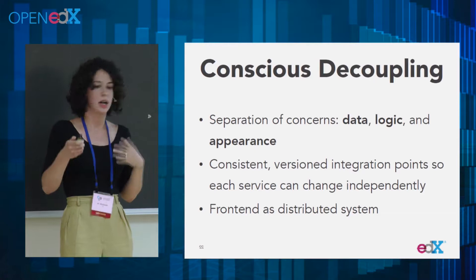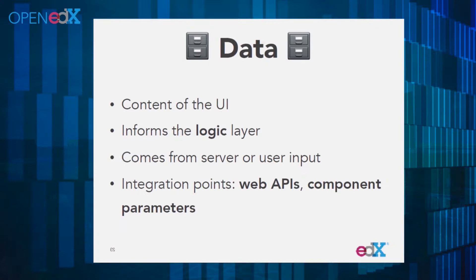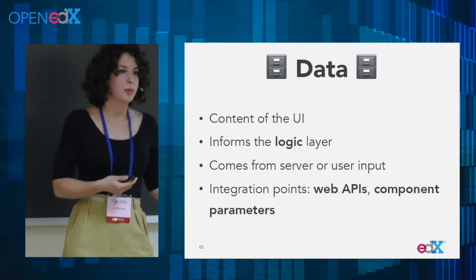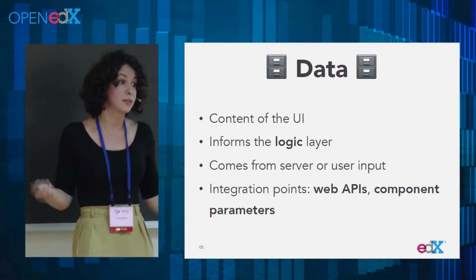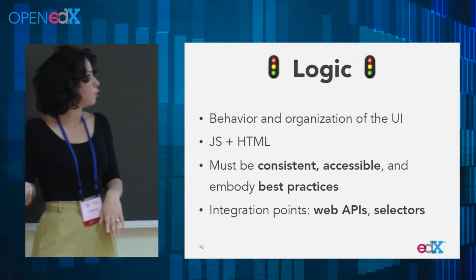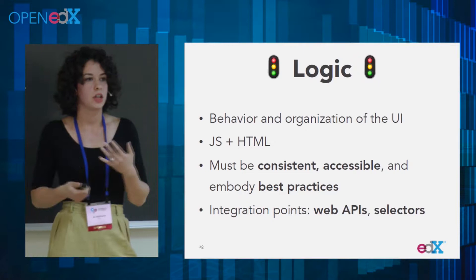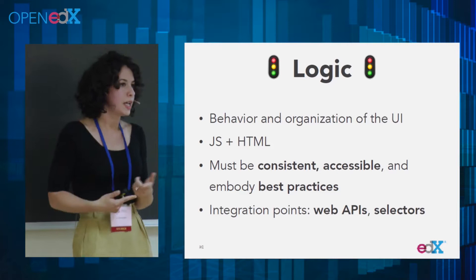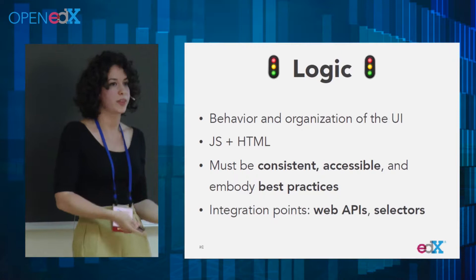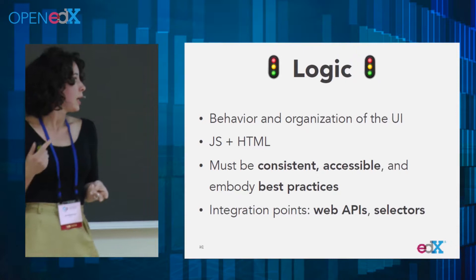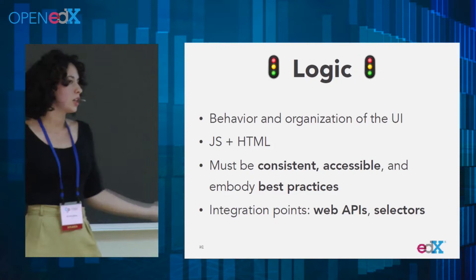The data side of things is the content of the UI — stuff you might get from the server or from user input. It informs the business logic, and our integration points there are web APIs. The data might get sent over from the server, or user input — if you type into a form, that's data we have to store. The business logic layer is how the front-end behaves and how it's organized, generally handled in the JavaScript and HTML. It's very important for this layer to be well-maintained and consistent so that it lines up well with the data side and the appearance side. Accessibility lives here as well, as do best practices. The integration points here are again the web APIs and the way the DOM is organized so that CSS selectors work consistently.